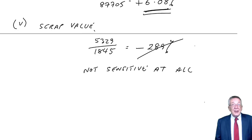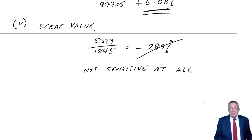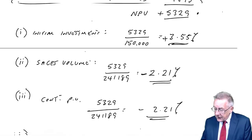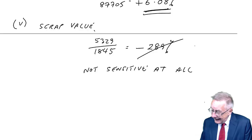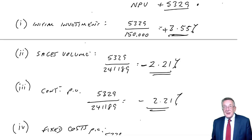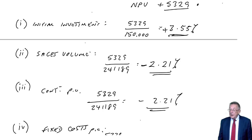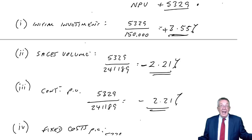However, one problem with sensitivity is that we only look at one item at a time — each one in isolation. So okay, if the sales volume was uncertain we can afford a drop of 2%; if the contribution per unit was uncertain we can afford a drop of 2.21%. But we can only look at one thing in isolation. The problem is that in real life they might all change — independently or interlinked. For example, a change in sales volume could be related to a change in selling price and therefore contribution.